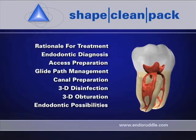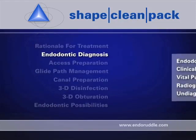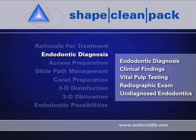Today I'm eager to talk about endodontic diagnosis, specifically the radiographic exam. In previous episodes we've talked about clinical findings and vital pulp testing, so the third phase of the endodontic exam is the radiographic examination. This is really important because it shows us things we can't see with the naked eye. We need to use aiming devices to get one-to-one images with little distortion, and radiographic machines that give us good contrast, because the radiographic exam is our eyes — it's how we see so many things we otherwise wouldn't know.